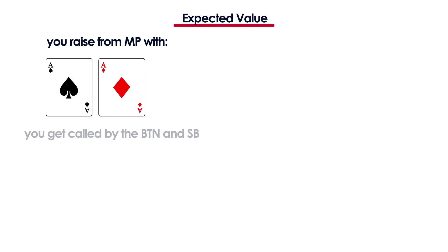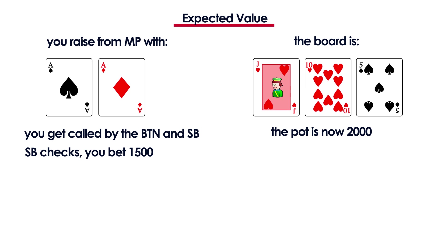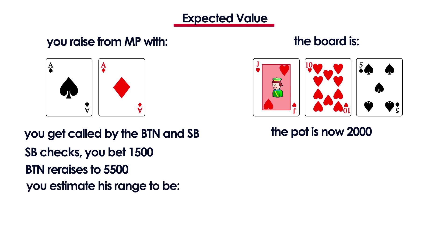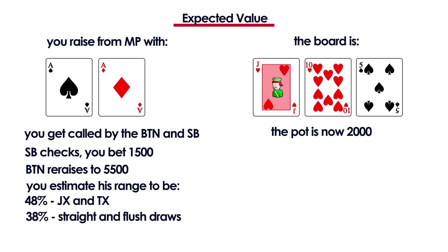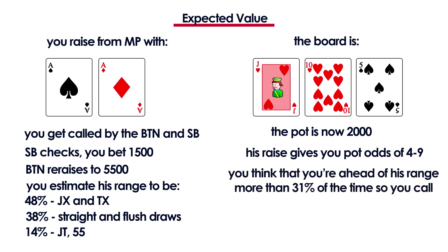So let's go over an example. You raise from middle position with aces and get called by the button and the small blind. The board comes jack, ten, five. Small blind checks and you bet 1500. The button, who is a little aggressive player, raises to 5500. At this point, given your knowledge of the player, you put him roughly on the following range of hands: all his jacks and tens with top pair at 48%, all his straight and flush draws at 38%, all his jack-tens and pocket fives at 14%. His raise gives you pot odds of 4-to-9, so you only need to win about 31% of the time to break even.